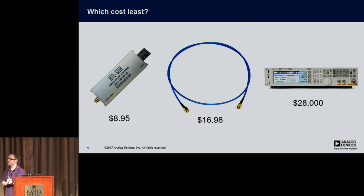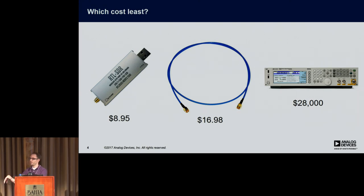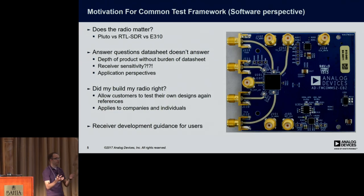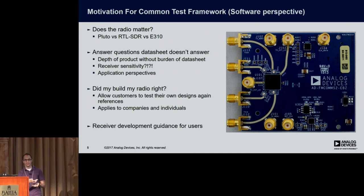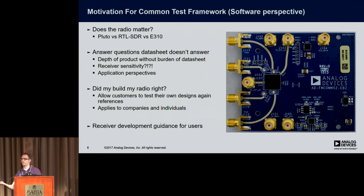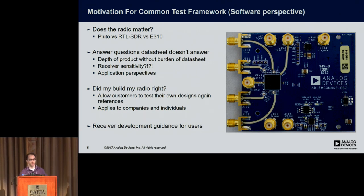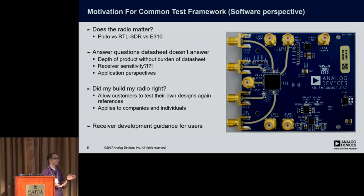When I started working with these devices, we had the USRP in our classroom, and that device was bolted down to the desk because the computer wasn't — it was worth more than the computer. ADI just came out with the Pluto device, which is in this realm of low-cost transceivers. People ask us all the time why they'd buy that over an RTL or even an E310 device. Questions like: what's the receiver sensitivity of the device? And honestly, that has no meaning unless you have a waveform associated with it.